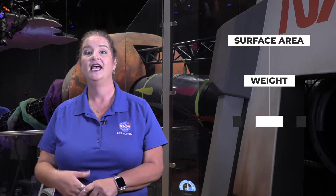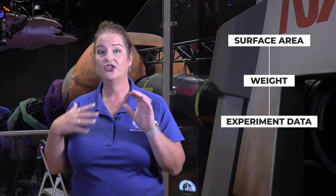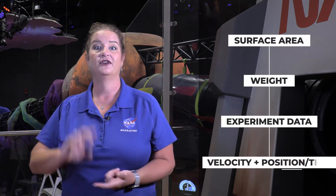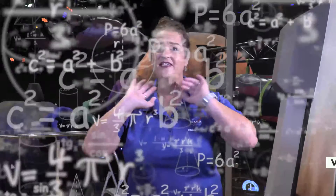Students, this is where you're going to gather your data. You can get the surface area of your parachute, the weight of your Eggstronaut and parachute experiment, and then you're going to take that data, load it into a tracking app, and you're going to get your vertical velocity, your vertical position over time. All this data sounds very difficult, but let me show you how it's done.